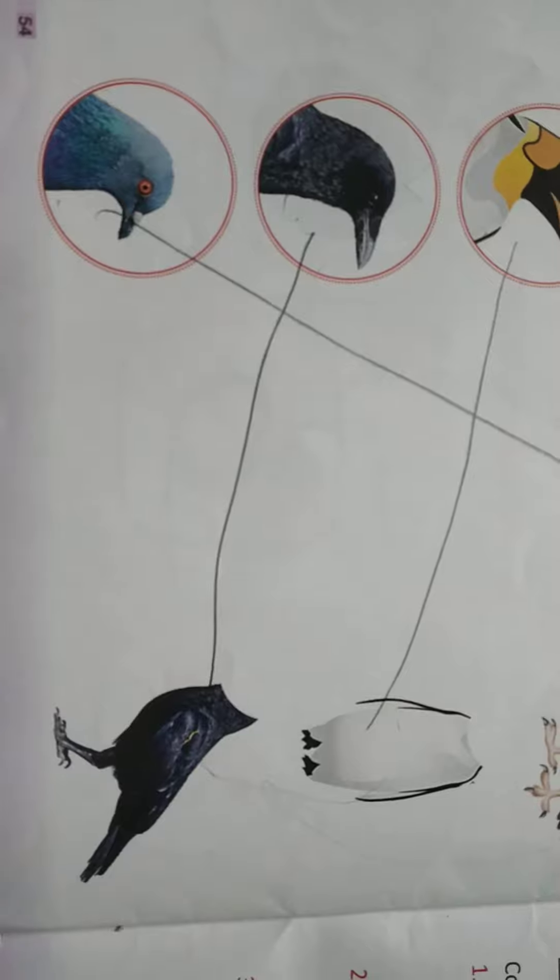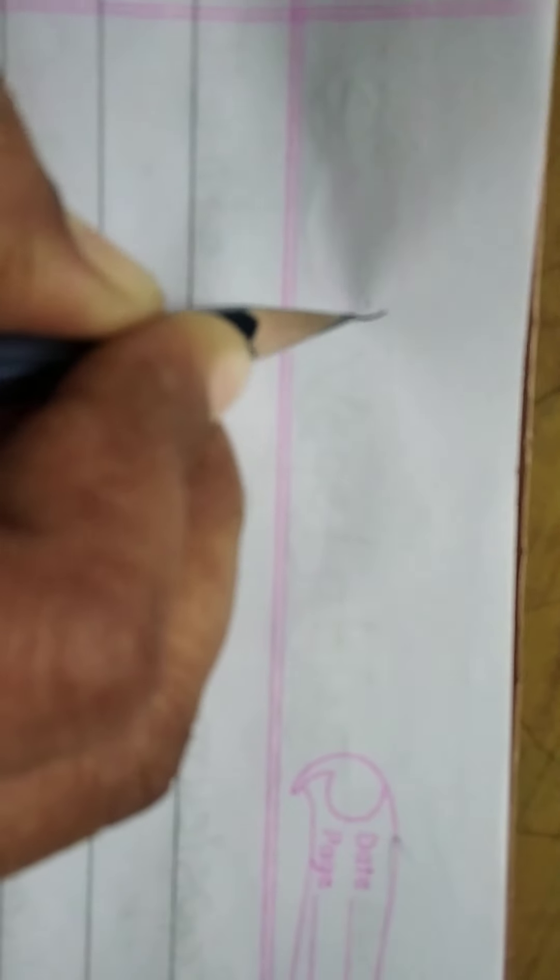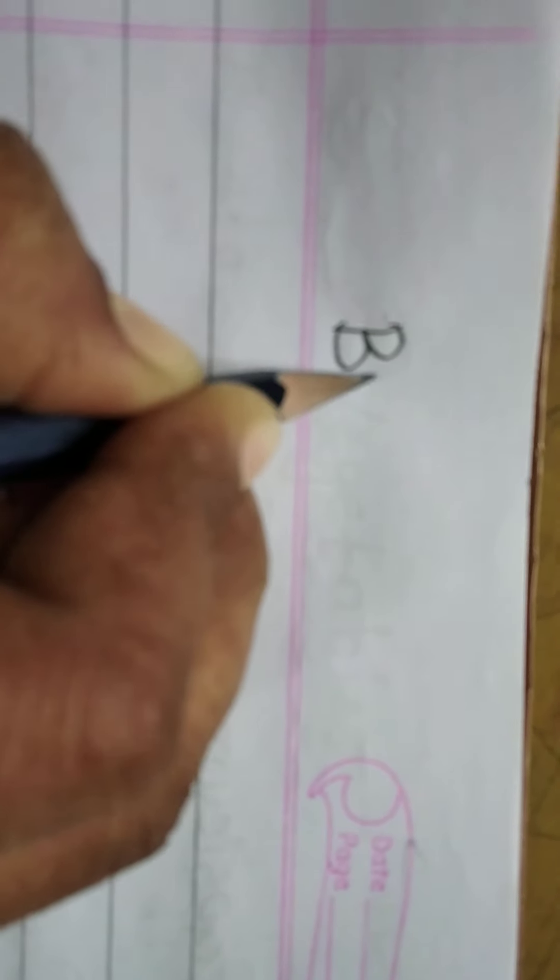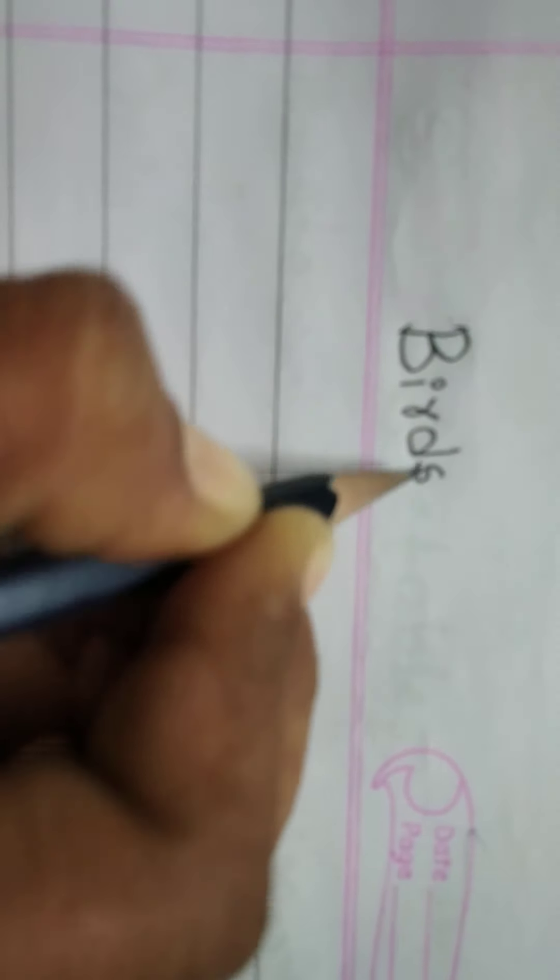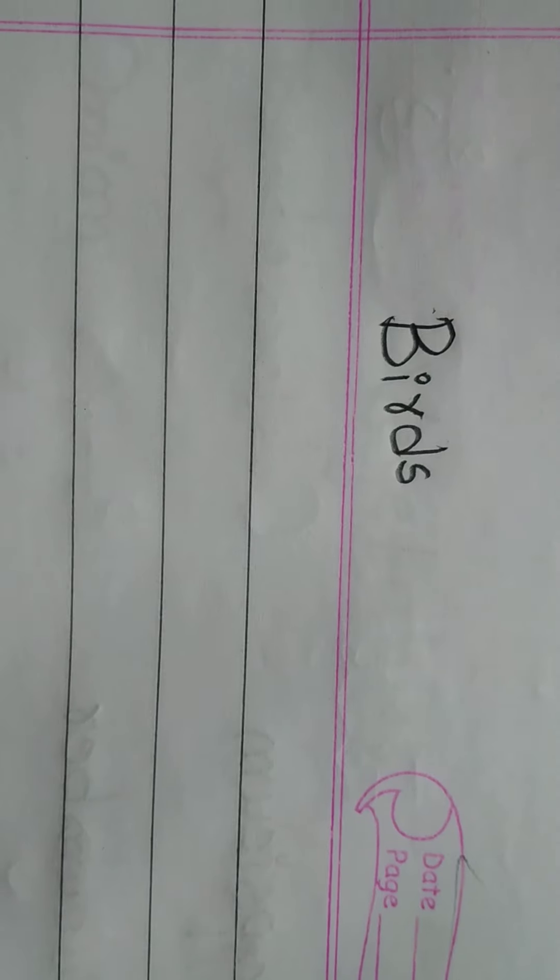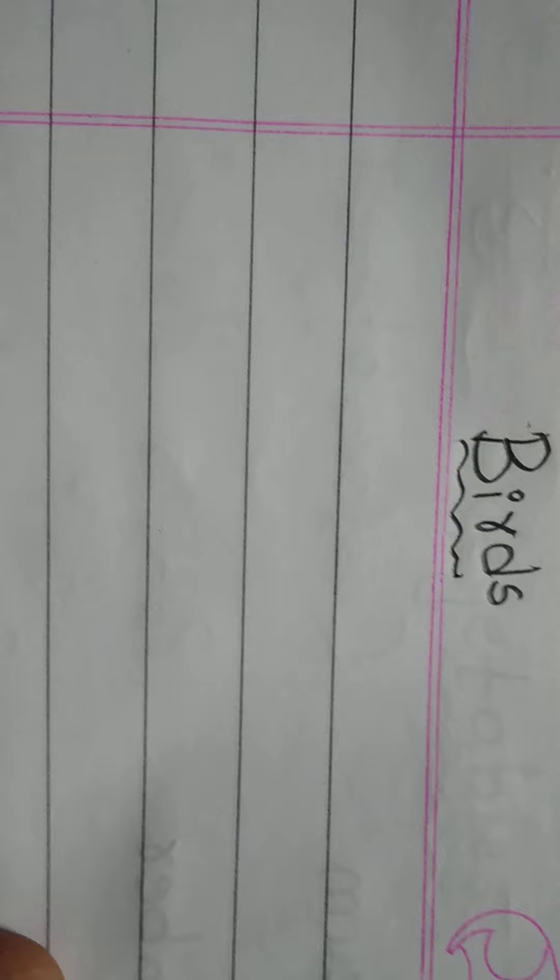Now open your class workbook children. Open your class workbook and write your heading. What is that? Birds. B-I-R-D-S. Birds. What we are writing in our class workbook? About birds we are writing.